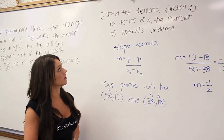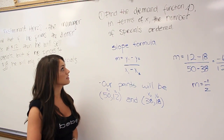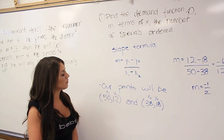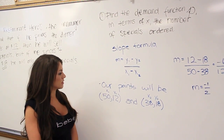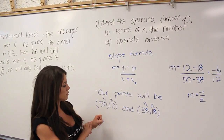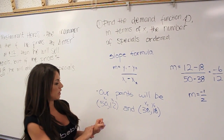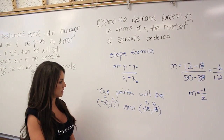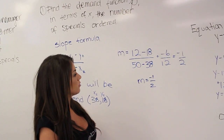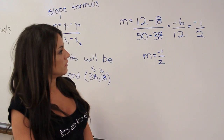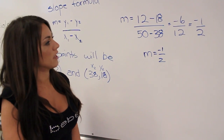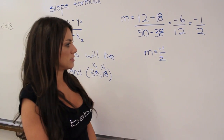Now we want to find the demand function of p in terms of X, the number of special orders. First, we're going to use our slope formula, which is M equals Y1 minus Y2 all over X1 minus X2. Our points will be (50, 12) — 50 special orders priced at $12 — and (38, 18) — 38 special orders priced at $18. Plugging into the slope formula gives us M equals 12 minus 18 all over 50 minus 38, which equals negative 6 over 12, which equals negative 1 half. Therefore, our slope is negative 1 half.